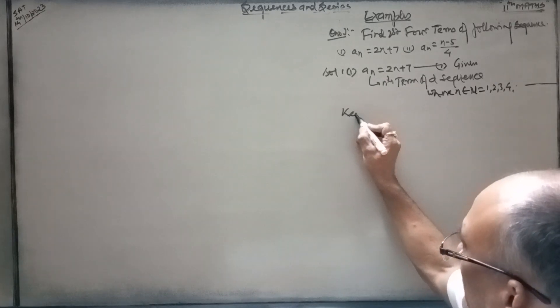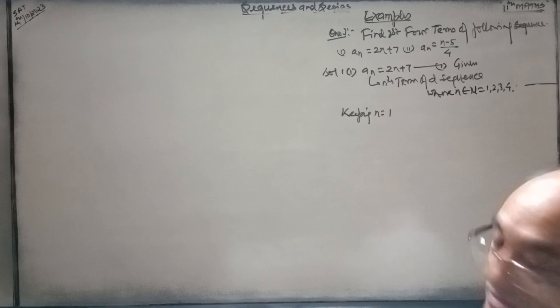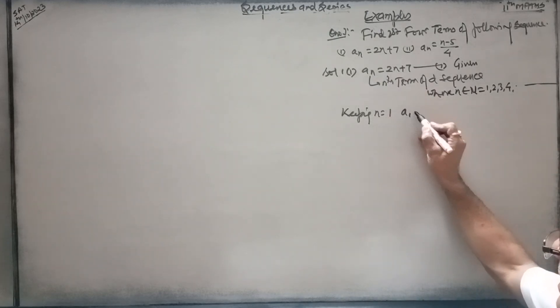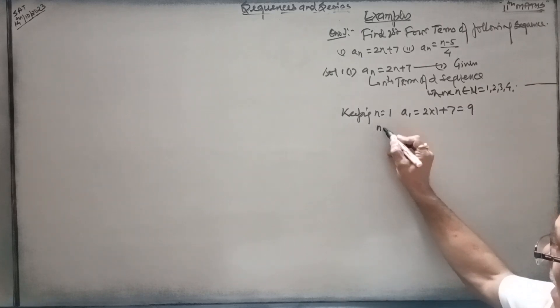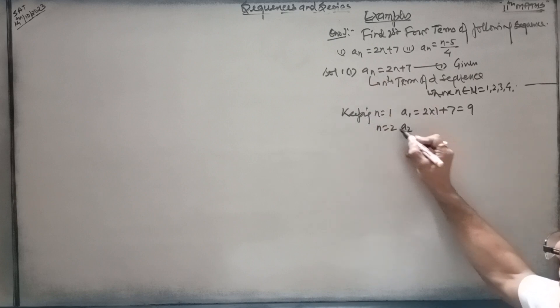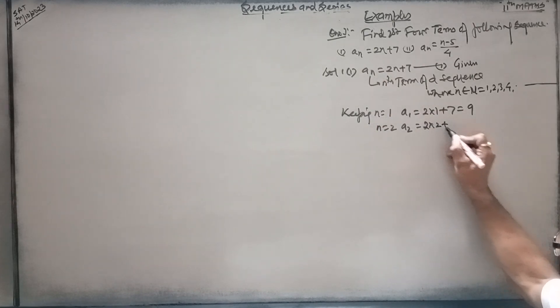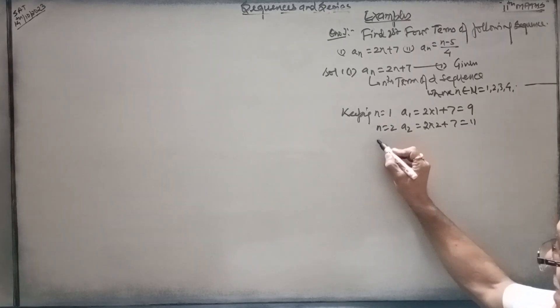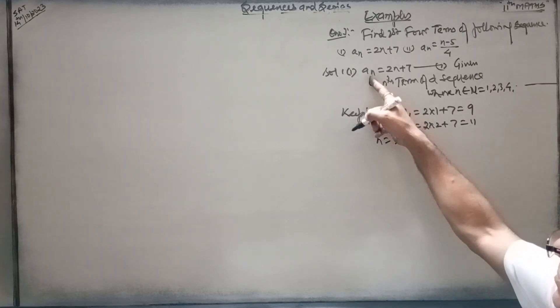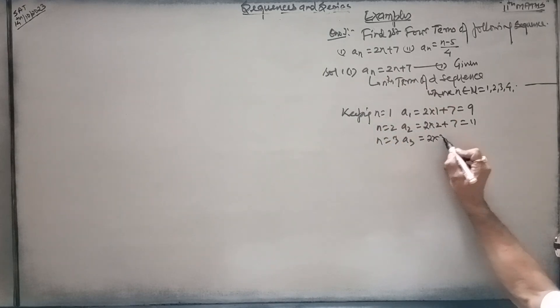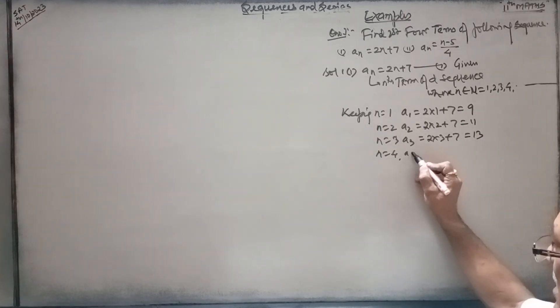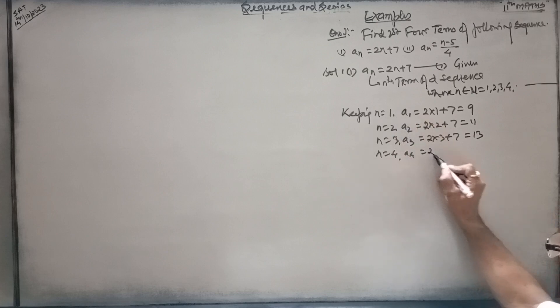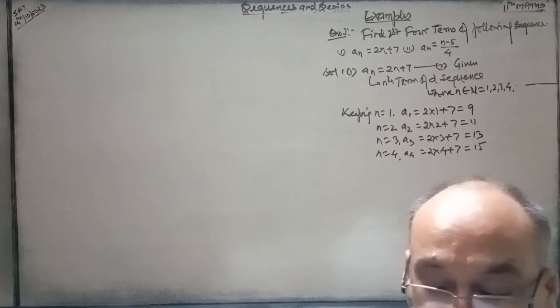Keeping n is equal to 1, a1 is equal to 2 into 1 plus 7. n is equal to 2 here, a2 is equal to 2 into 2 plus 7. n is equal to 3, a3 is equal to 2 into 3 plus 7. n is equal to 4, a4 is equal to 2 into 4 plus 7.